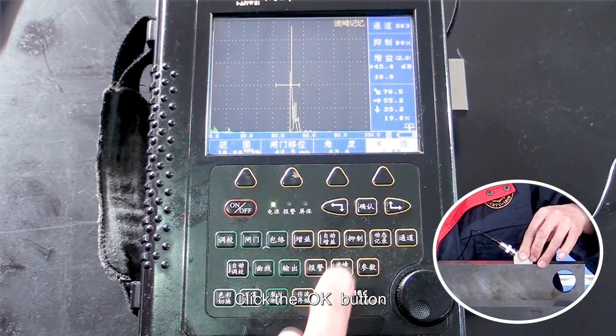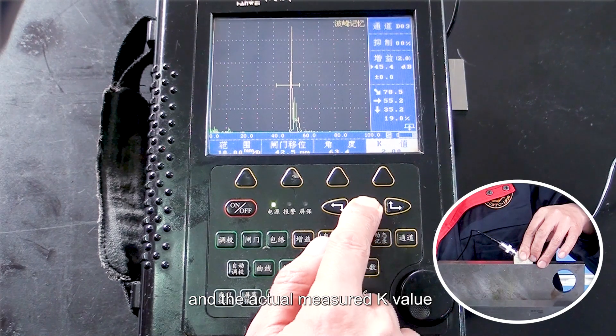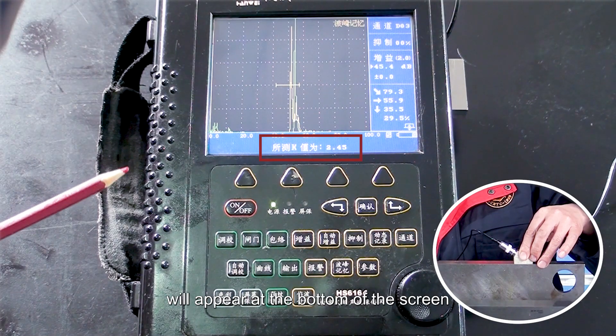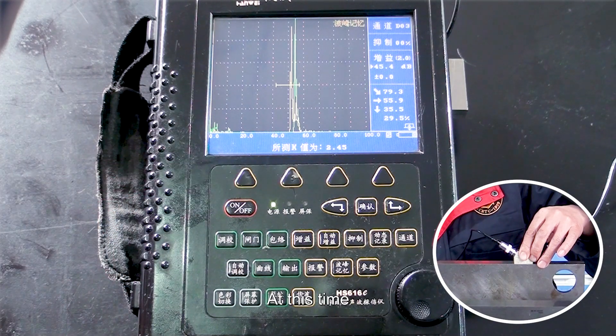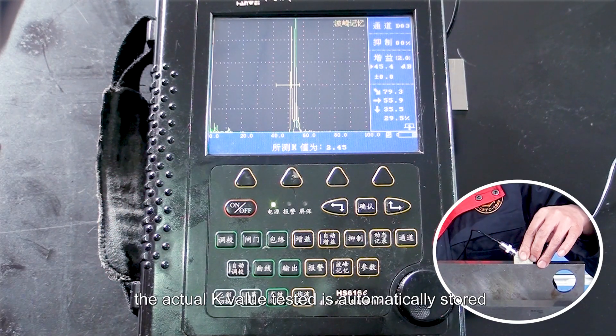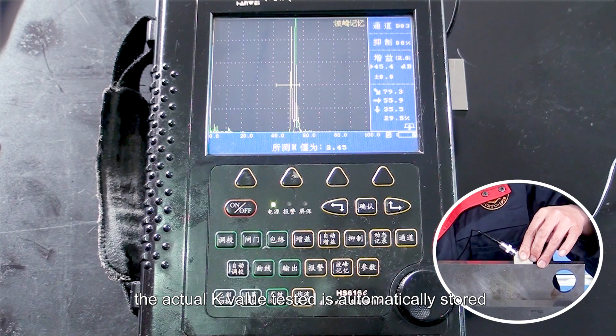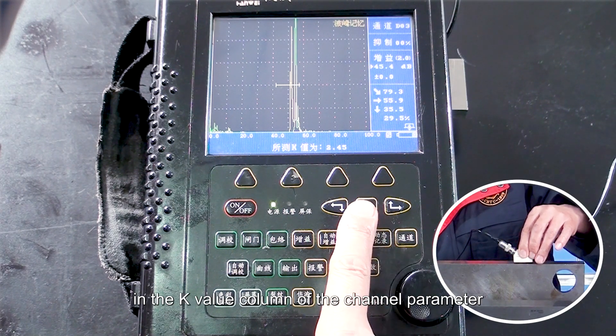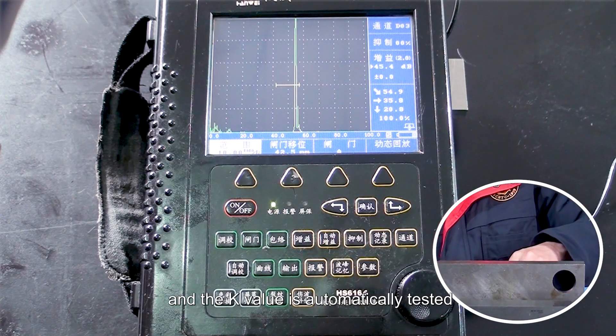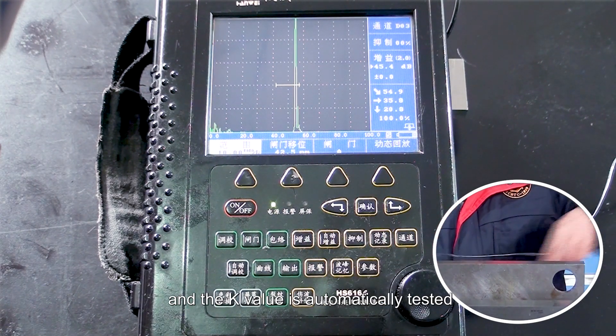Click the OK button, and the actual measured K-value will appear at the bottom of the screen. At this time, the actual K-value tested is automatically stored in the K-value column of the channel parameter, and the K-value is automatically tested.